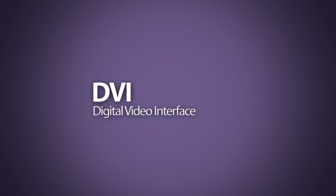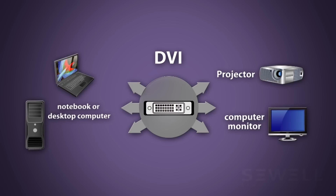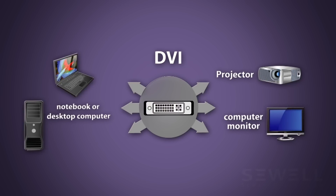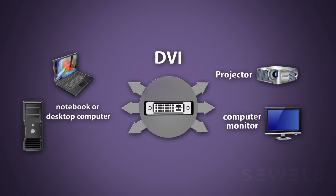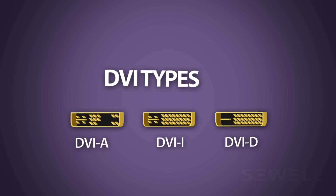DVI, Digital Video Interface, is an interface that can send digital or analog video between devices. The many different types of DVI cables available can sometimes get confusing, but we will show you how to choose the right cable.